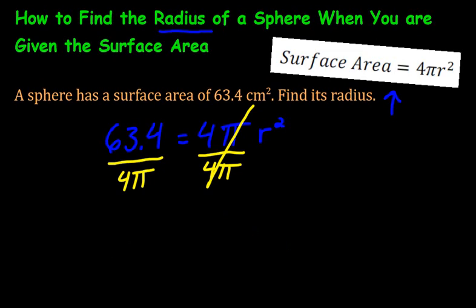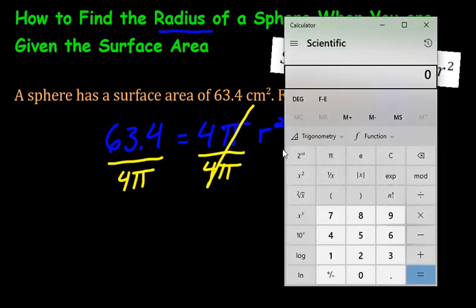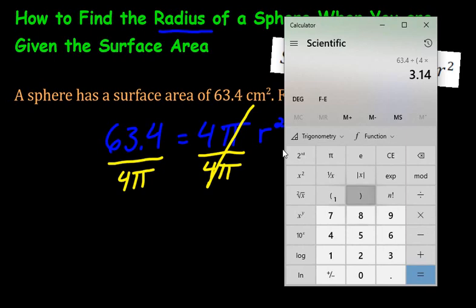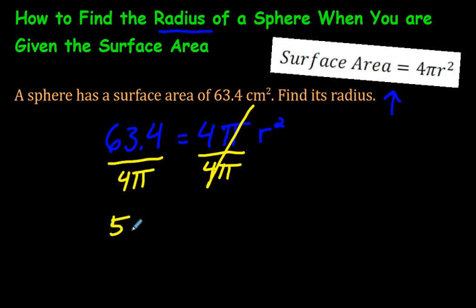Let me get my trusty calculator out, and we are going to go 63.4 divided by, I am going to put it in brackets, 4 times 3.14 in brackets, just to make sure it gets done properly. The answer is in this case 5 point, let's just round it off, 5.05. So let's round it off to 5.05 is equal to r squared.